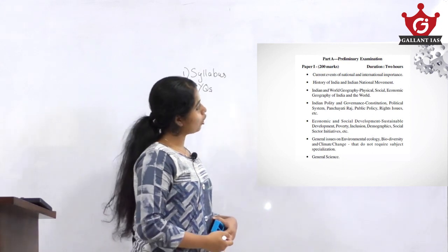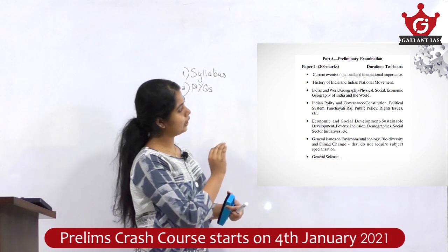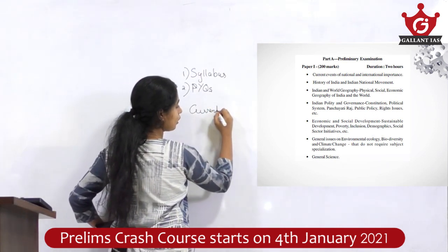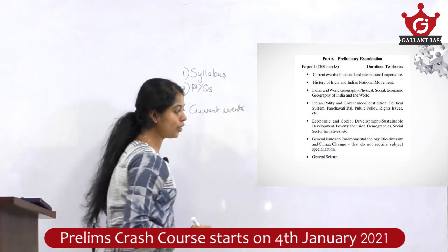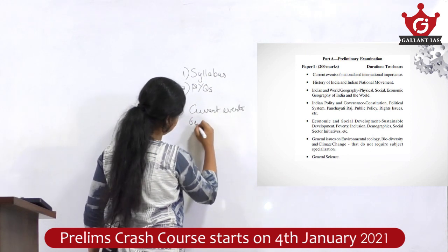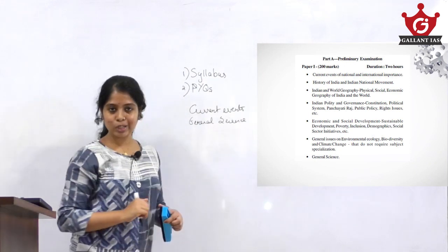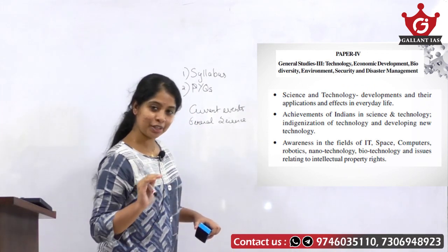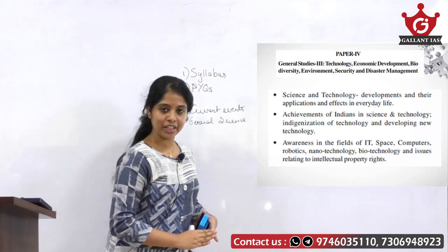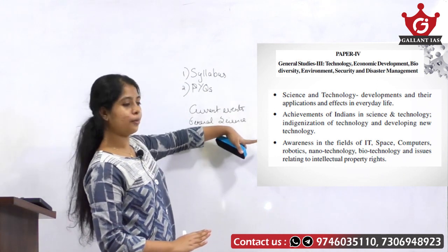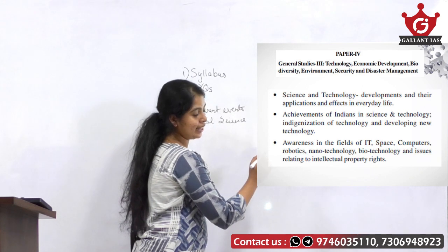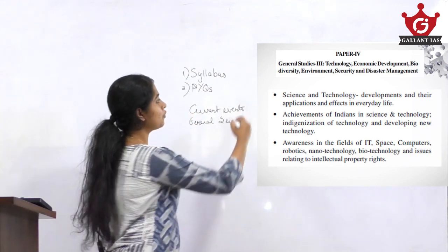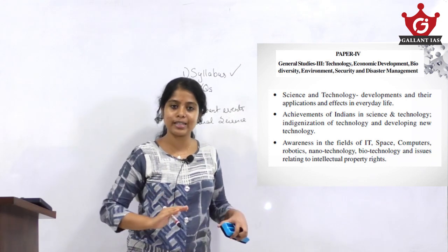This is the syllabus of the preliminary examination. Space can come under two subsections: current events of national and international importance, and also general science. Now let us go to the syllabus of mains — this is Paper 4, that is GS3. Under science and technology, look at the third bullet point: awareness in the field of IT and space. That is where space comes under the mains syllabus.